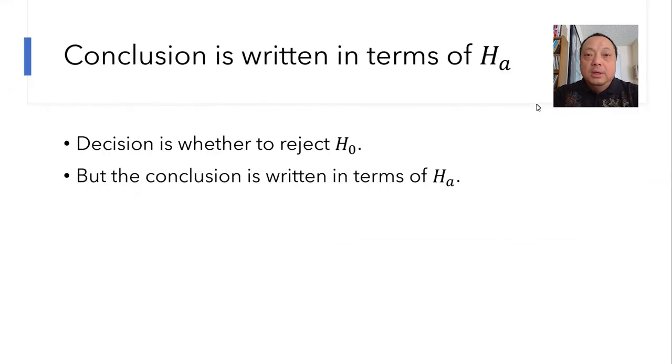And number two, even though the thing you reject or don't reject is H0 if p-value is less than alpha or if p-value is not less than alpha, the conclusion is written in terms of HA.